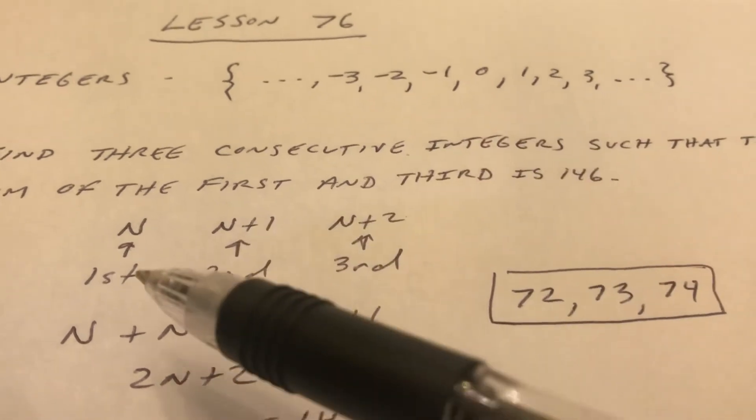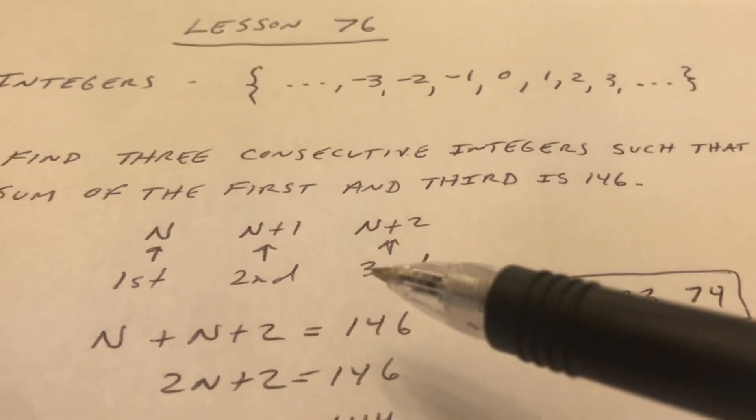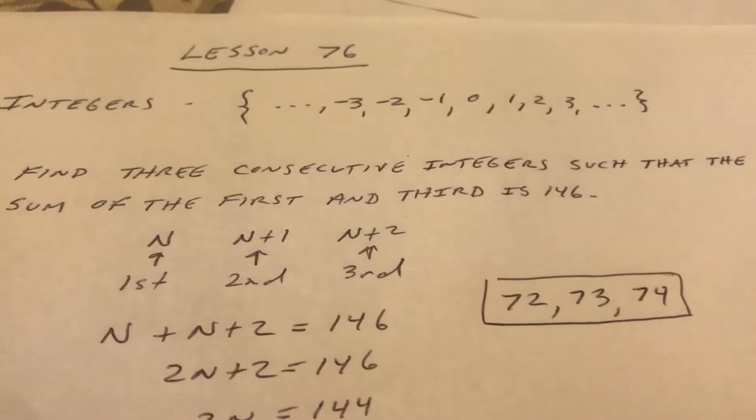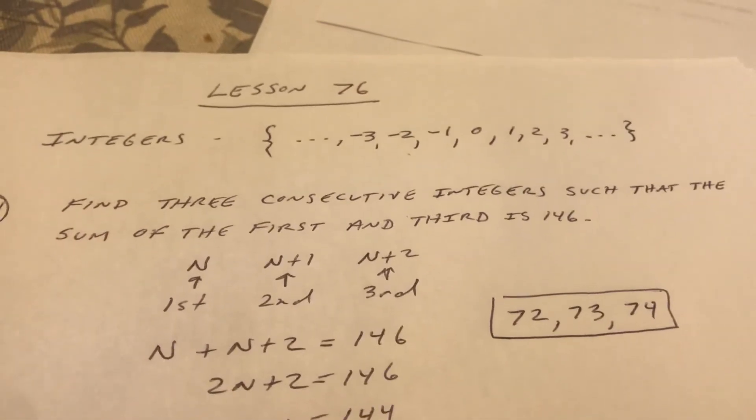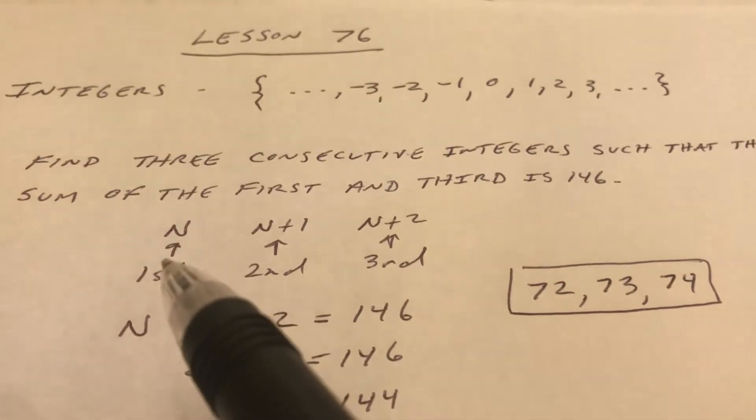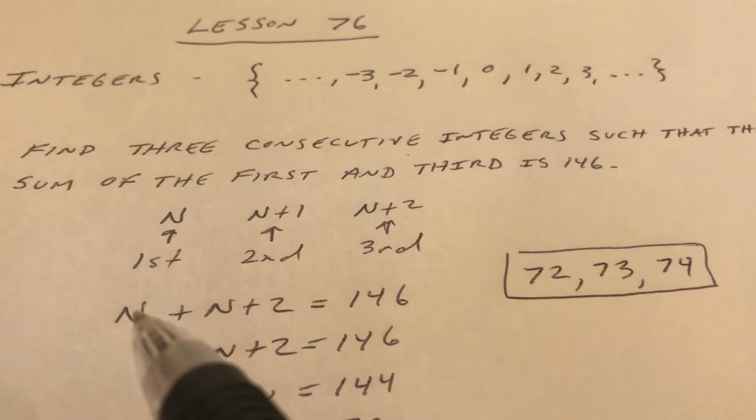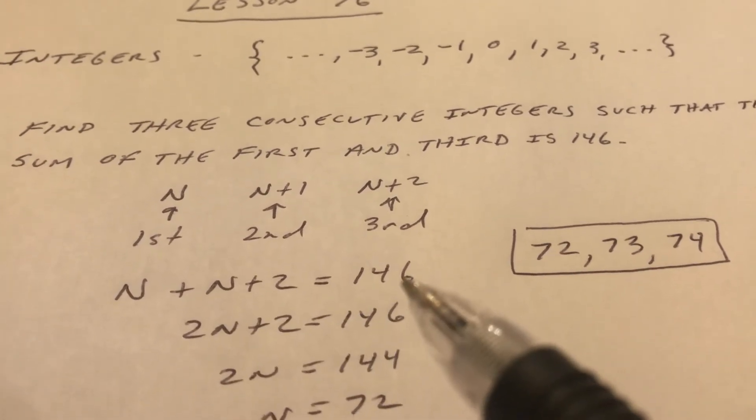They differ by one. First one, second one, third one. So it says the sum of the first and the third. So sum means to add. So n plus n plus 2 equals 146.